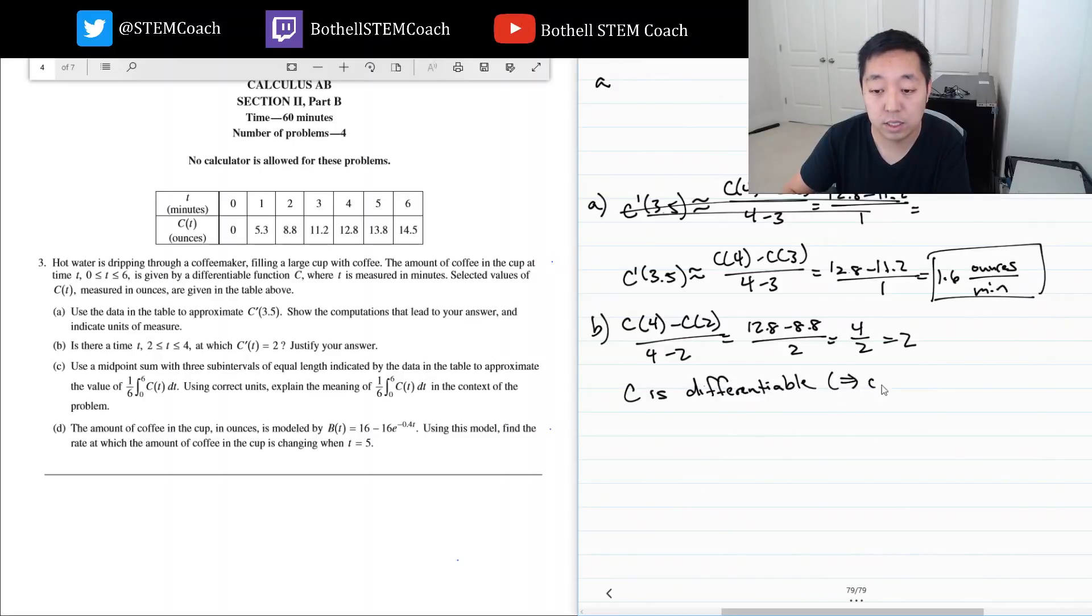And hence continuous. Because of this, by the mean value theorem, there must be a time t between two and four. There exists, there must be a time t between two and four because the secant line slope is two. There's got to be a t such that c prime of t is equal to two, and the t is between two and four.